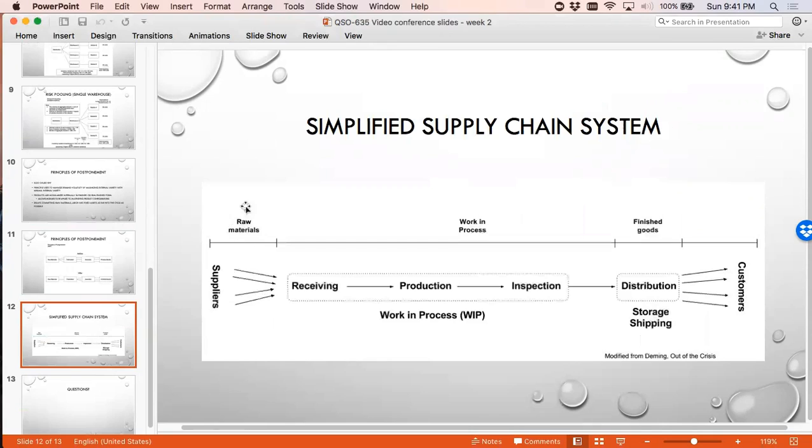So we have the suppliers which provides the raw materials. This aligns with one of the diagrams in the chapter where we have work in process. So work in process is your receiving, production, and inspection, and then distribution is your finished goods, and it goes out to the customer.